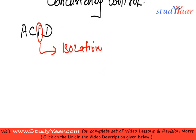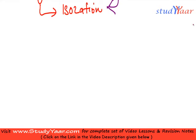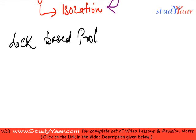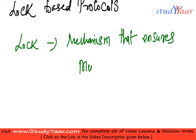So I'll talk about these techniques which ensure isolation. Why do we need concurrency techniques? Because we want to ensure isolation. The first set of techniques we are going to look at is lock-based techniques, or lock-based protocols. Let's see what a lock is.